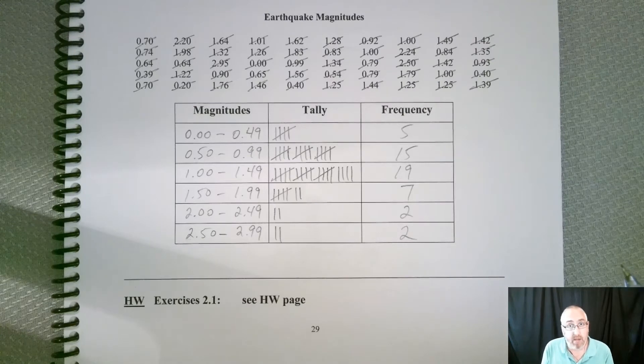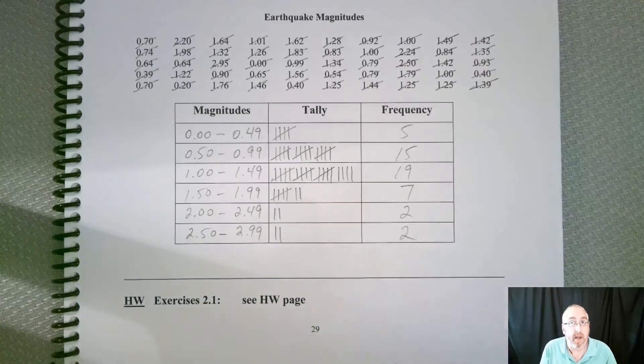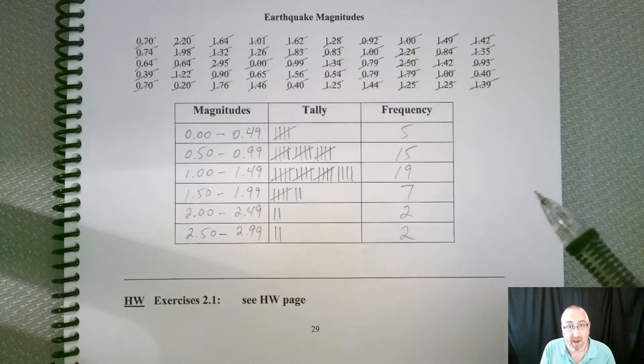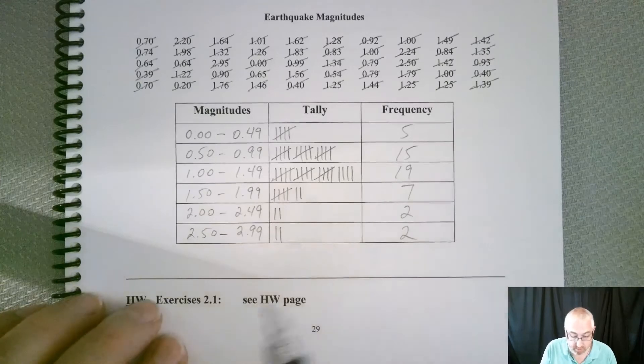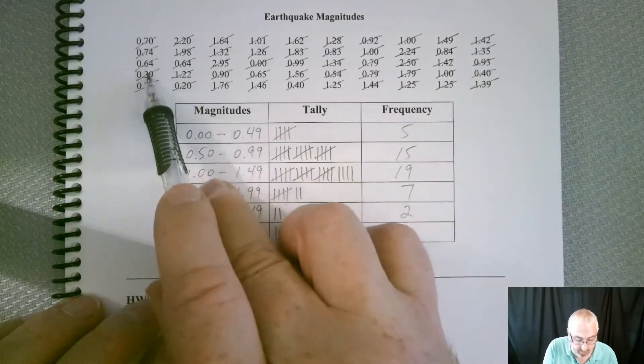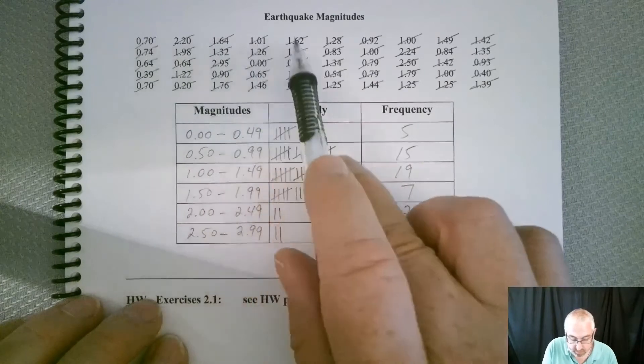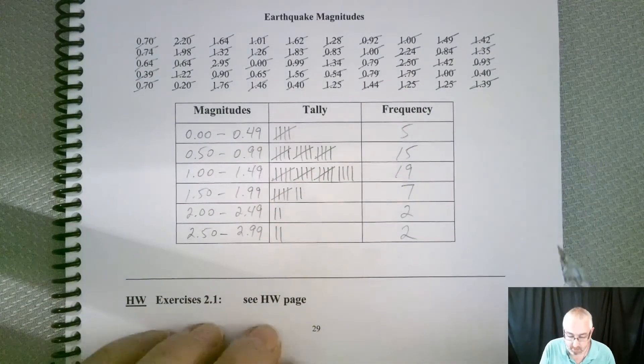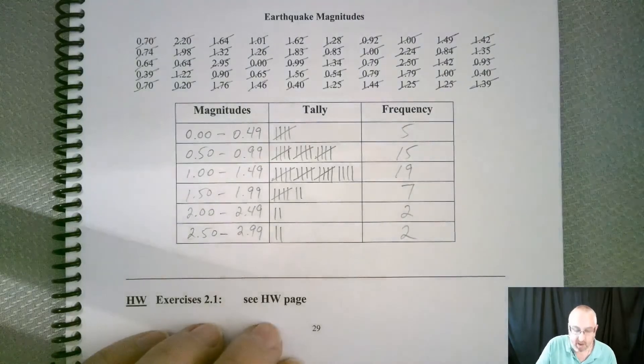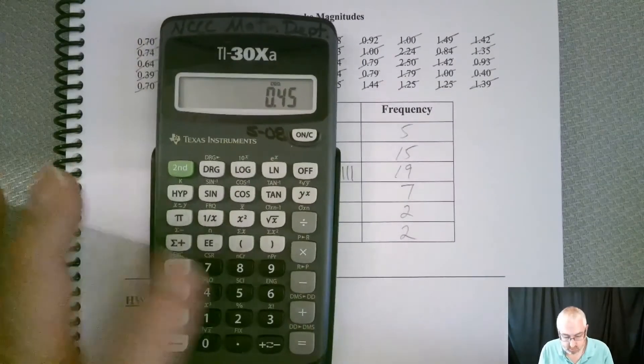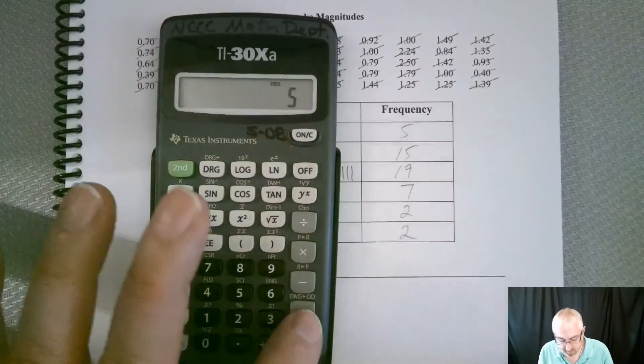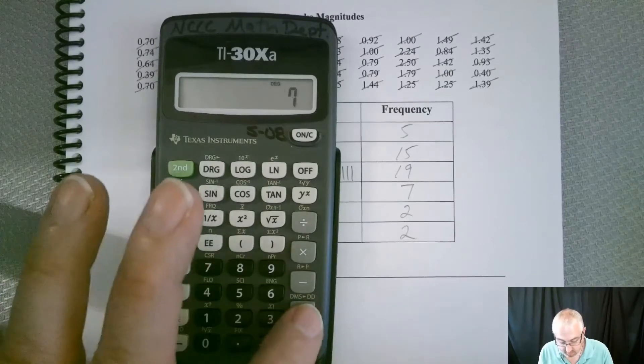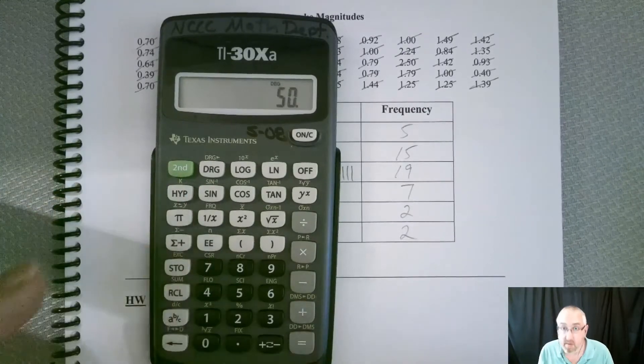Now, the one thing that I didn't show you before is when you're creating a frequency distribution from data like this, it doesn't hurt to double check to make sure you got all of them. There should be 50 numbers in this table. So let's just double check that we got them all.